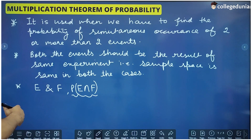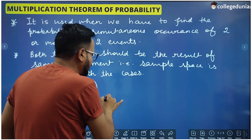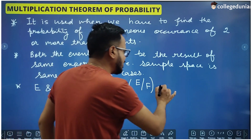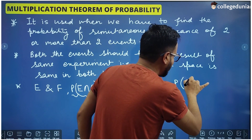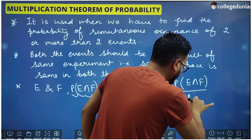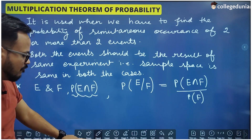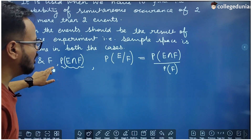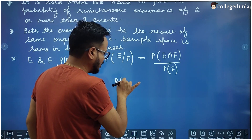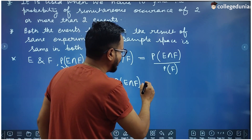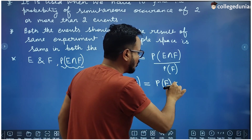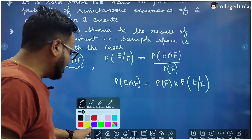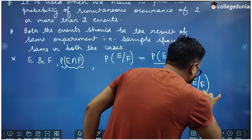Before the Multiplication Theorem of Probability, we all have studied conditional probability, which says the conditional probability of E when F has already occurred — written as P(E|F) — is simply P(E∩F) divided by P(F). So the value of P(E∩F) is P(F) multiplied by P(E|F). This result is called the Multiplication Theorem of Probability.